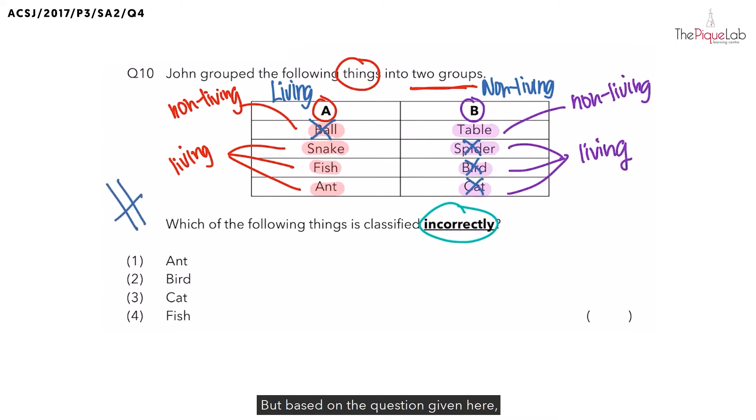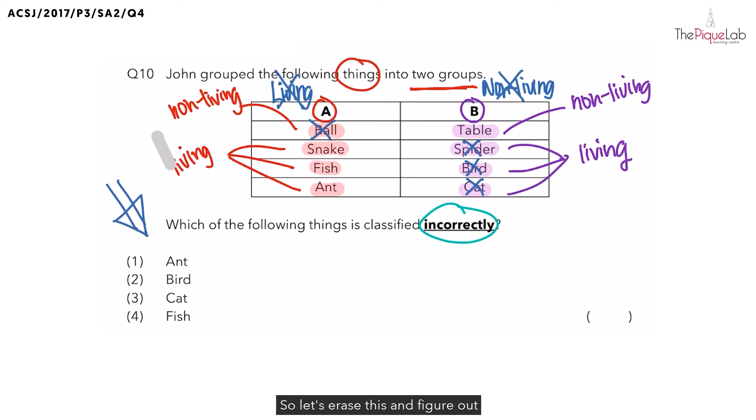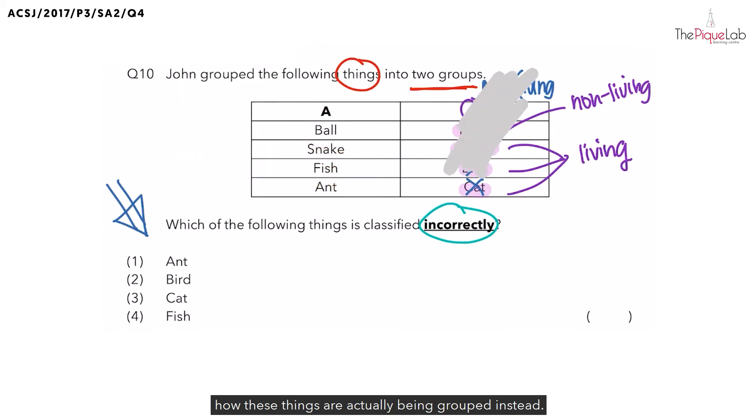But based on the question given here, you would realize that there is actually only one thing that has been classified incorrectly. So this means that these things are not grouped by living and non-living things. If not, there would be four things that are classified incorrectly. So let's erase this and figure out how these things are actually being grouped instead.